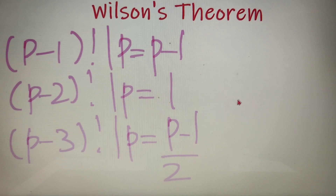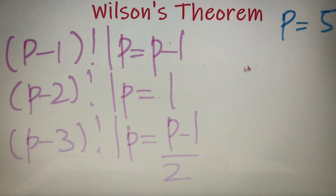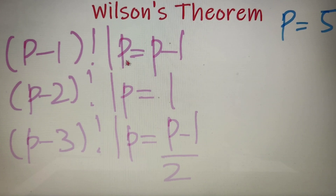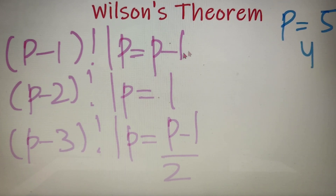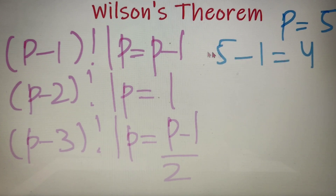Let's take an example to confirm. Let p equal 5. Then (p-1) factorial is 4 factorial, which equals 24. When 24 is divided by 5, the remainder is 4. And p minus 1 is also 4, so the first case is verified.